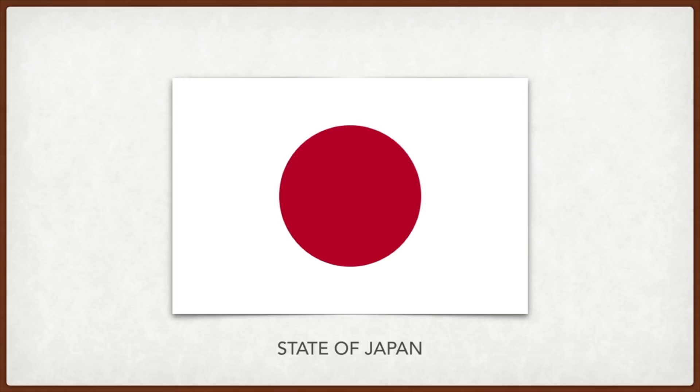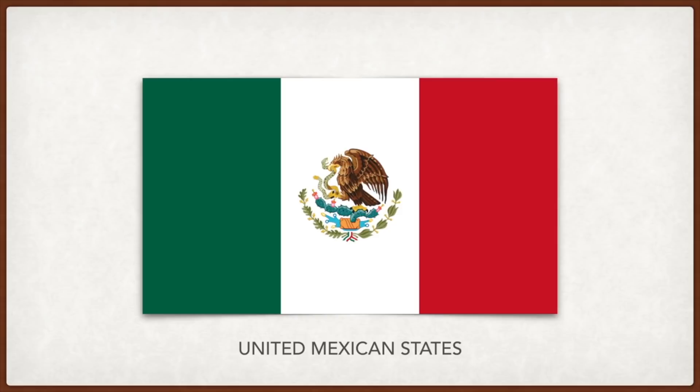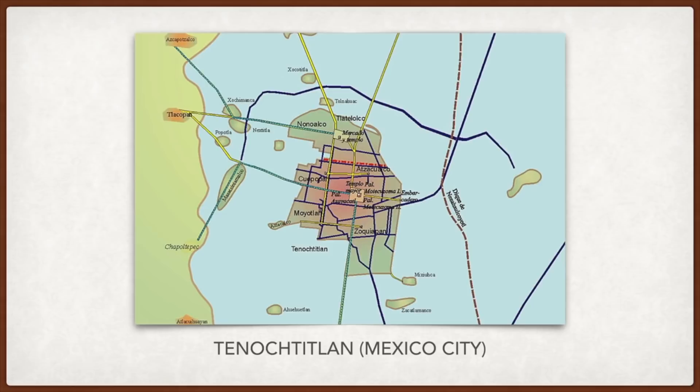Mexico: the emblem in the middle is from an Aztec legend where the gods marked the place where Mexico City would be founded — an eagle holding a serpent while perched atop a prickly pear cactus, which itself was on a rock rising above a lake, symbolic of Mexico City, which was founded on a lake.